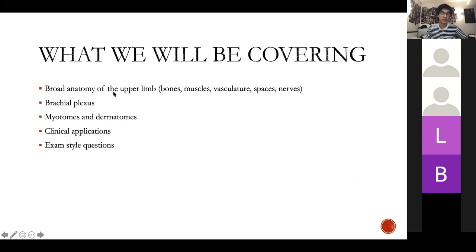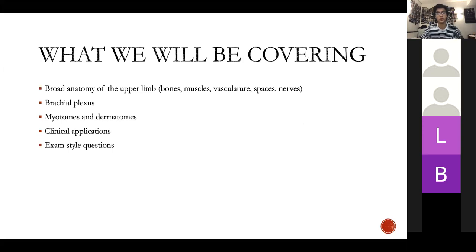So what we'll be covering today: the broad anatomy of the upper limbs — the bones, muscles, vasculature, spaces, nerves, and your brachial plexus. What I'm not going to do today is go through each of the muscles in the upper limb. At this point it's probably less high yield for you guys to learn those specifically. It's more going to be focused on clinical cases, which will be the crux of the exam. We're going to go through myotomes and dermatomes, clinical applications, and some exam-style questions.